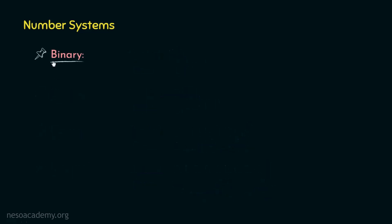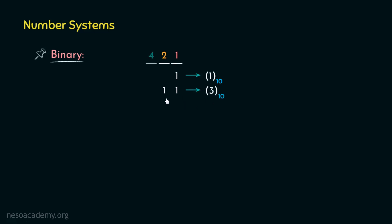Now let's observe the binary number system. In case of binary, using one bit, the maximum value that we can express is 1, which in terms of decimal is also 1, and it's 1 less than the next bit place's value, that is 2. Similarly, using 2 bits, the maximum value can be represented as 1,1 which in decimal is 3, because 2 plus 1 is 3, which again is 1 less than the next bit place's value, that is 4. Now with 3 bits, at max we can represent 1,1,1 which in decimal is 4 plus 2 plus 1, that is 7, which again is 1 less than the next bit place's value, that is 8.